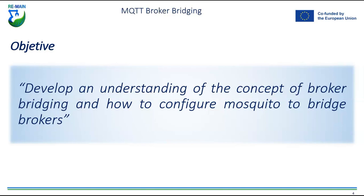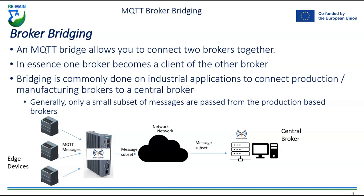We want to develop an understanding of the concept of broker bridging and how to configure Mosquitto to bridge brokers. An MQTT bridge allows you to connect two brokers together. You're familiar with the concept of connecting clients to brokers, and in scenarios involving scalability — say 60,000 to 80,000 clients — you might want to segregate that data at the broker level, connecting them to different brokers and only passing relevant data to the cloud or to other brokers where necessary.